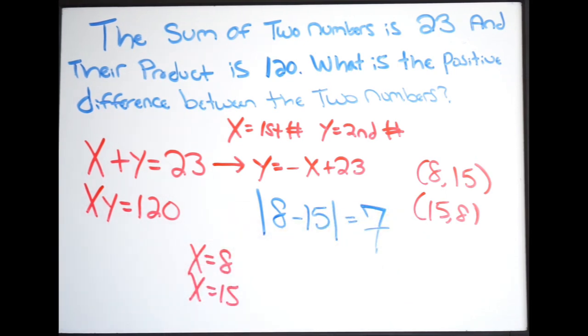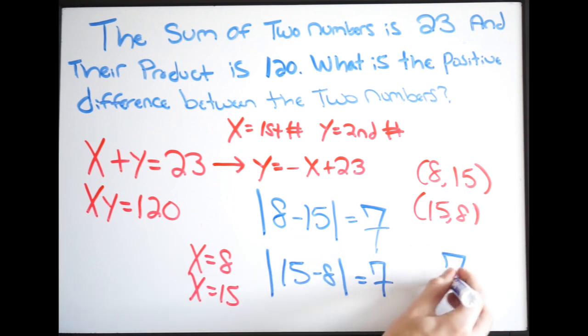If you were to pick this point, well, you get the same answer. Take the absolute value, and you get 15 minus 8. And this is also going to give us positive 7. So we can say here that the positive difference between our two numbers is going to be 7. And again, our two numbers were 8 and 15. All right. And that is it.